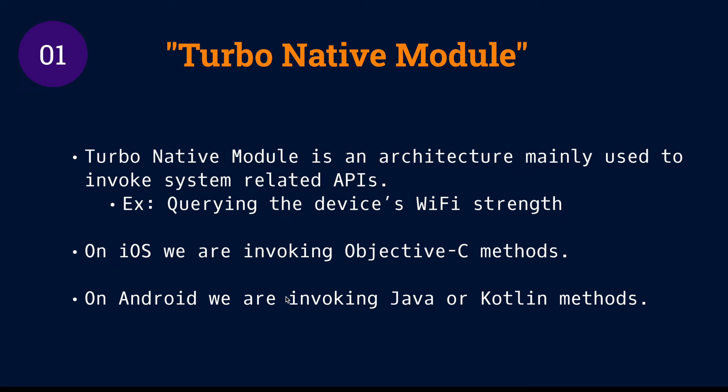So let's talk about TurboNative Modules. What is TurboNative Modules? TurboNative Modules is an architecture, a library architecture, mainly used to invoke system-related APIs. Why system-related APIs? Because TurboNative Modules can invoke Objective-C and Java or Kotlin, depending on the platform. For example, querying the device's Wi-Fi strength — it is a system-based API and we are able to invoke this method from the JavaScript engine side. On iOS, we are invoking Objective-C methods. On Android side, we are invoking Java and Kotlin methods.